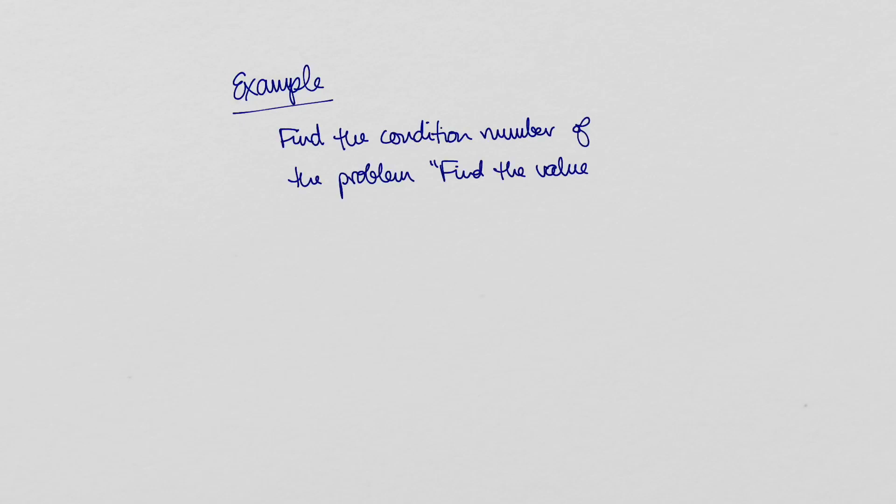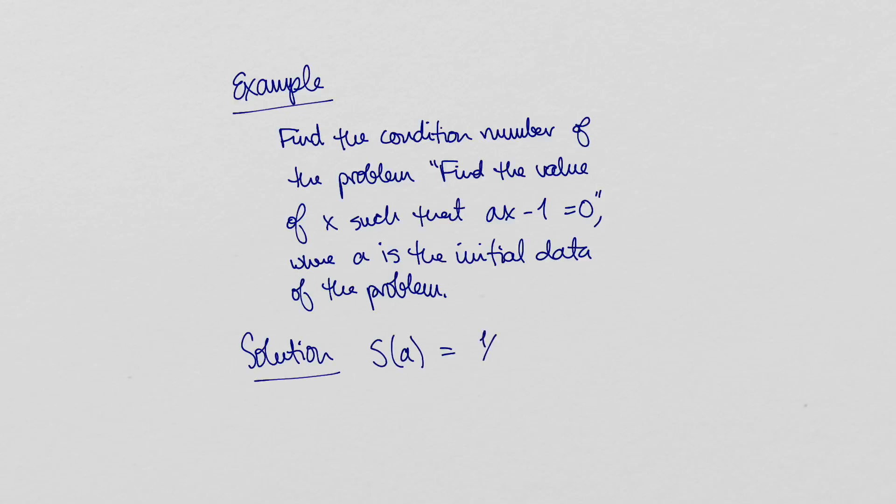For example, given a real number a, we might want to solve the equation ax minus 1 equals 0. The solution to this equation is x equals 1 over a, so the map from the initial data to the problem's solution is the reciprocal function. As we just figured out, this function has a condition number of 1.